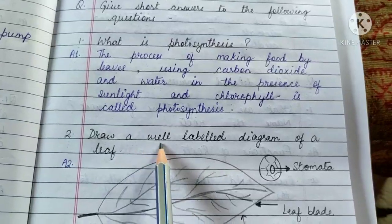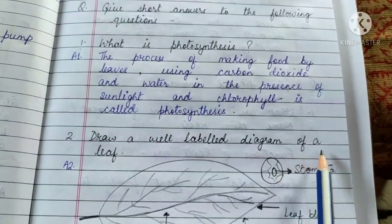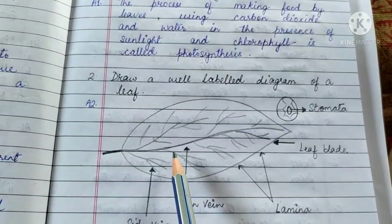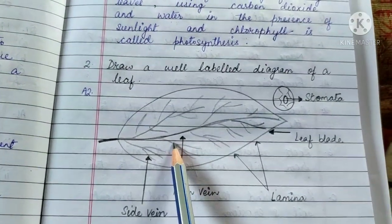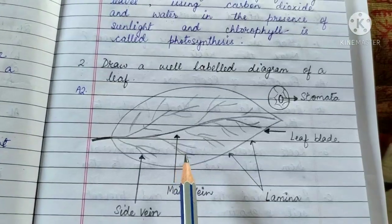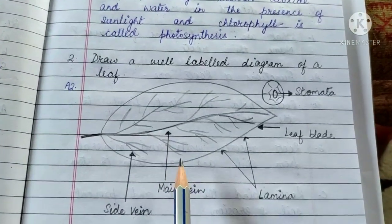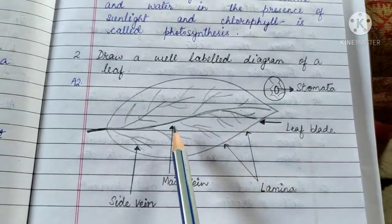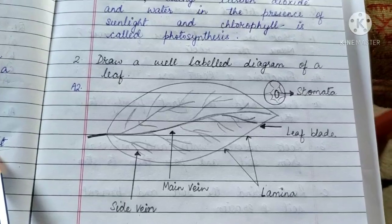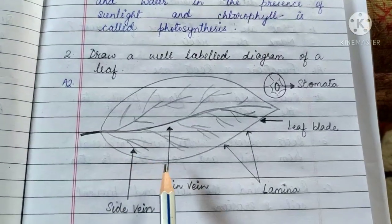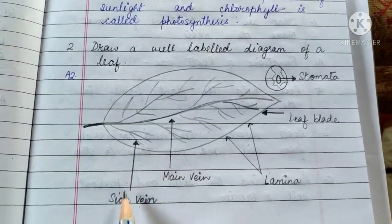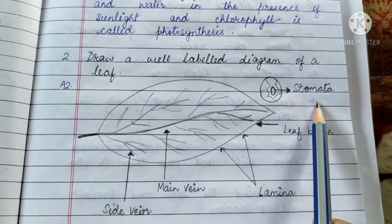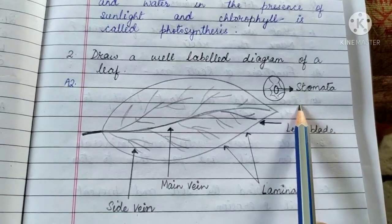Question 2. Draw a well-labeled diagram of a leaf. Answer. Children, please remember that all the diagrams have to be drawn on the white page of your EVS notebook, that is on the blank page. Draw this neat and well-labeled diagram of the leaf and mention all the parts. Here I have drawn and labeled the parts: the main vein, side veins, the lamina or the leaf blade, as well as the stomata, that is the tiny pores on the underside of the leaves.